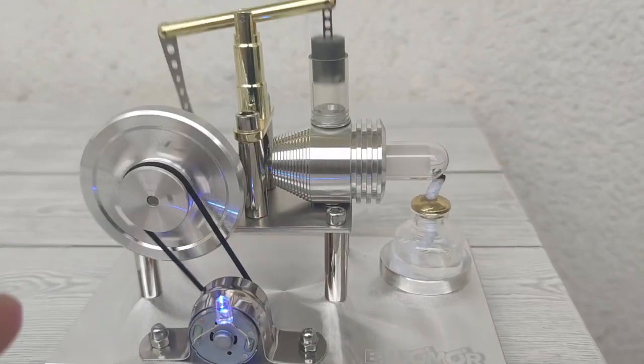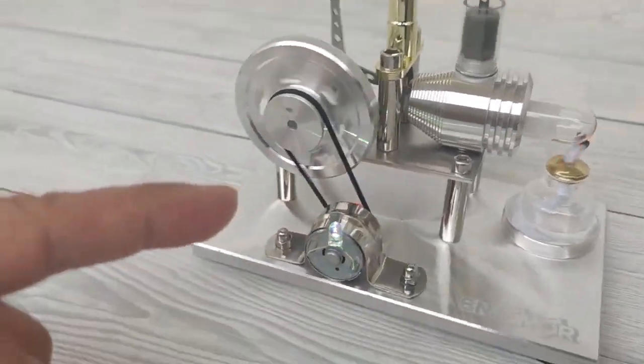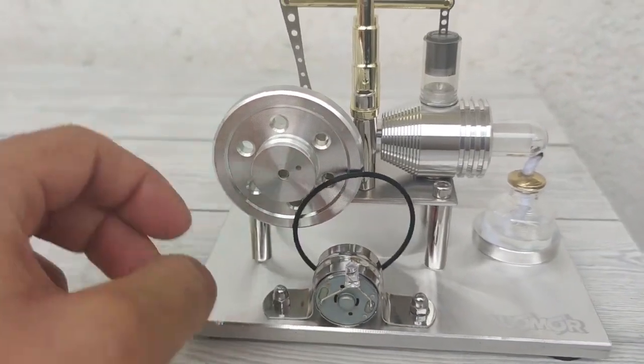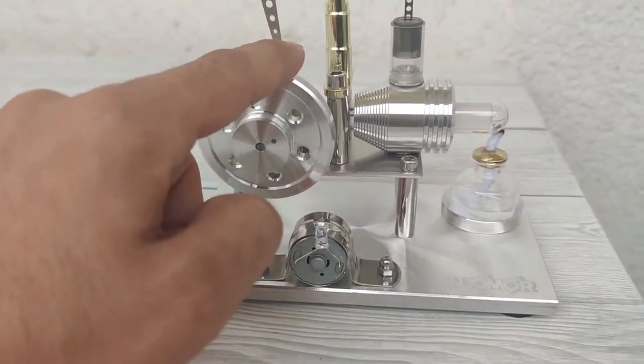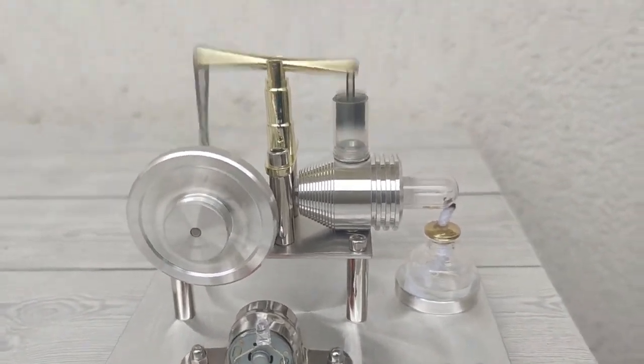But the most interesting part came when I detached the belt from the flywheel. In that way it does not spend power to produce energy and it will spin much faster. According to the manufacturer it can spin at about 1700 RPM, and I think that this was probably that speed.